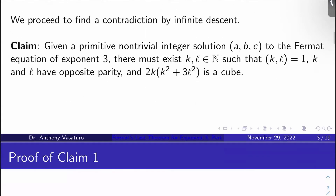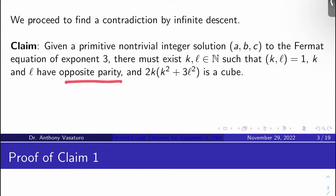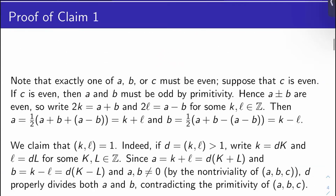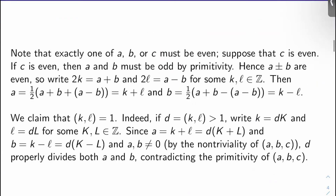Claim 1: Given a primitive non-trivial integer solution A, B, C to the Fermat equation of exponent 3, there must exist two natural numbers K and L such that K and L are co-prime, K and L have opposite parity (one is odd and one is even), and 2K times (K squared plus 3L squared) is a perfect cube. Let's prove this. First of all, note that exactly one of A, B, or C must be even.